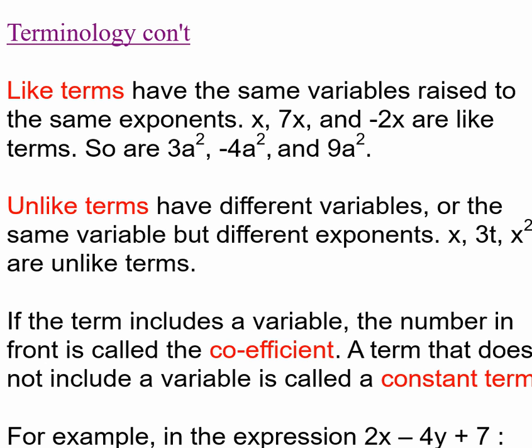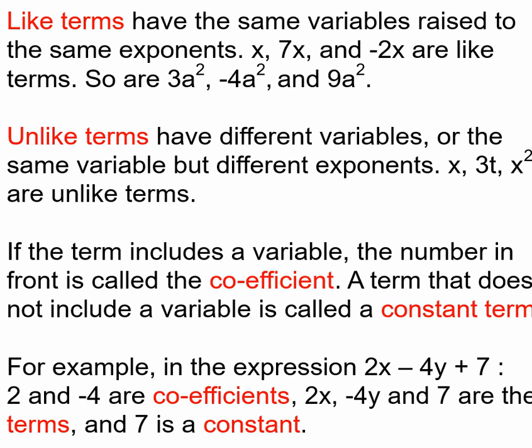If a term has a variable, the number in front of that is called the coefficient. For example, in 3x, 3 would be the coefficient. It tells you how many x's there are.